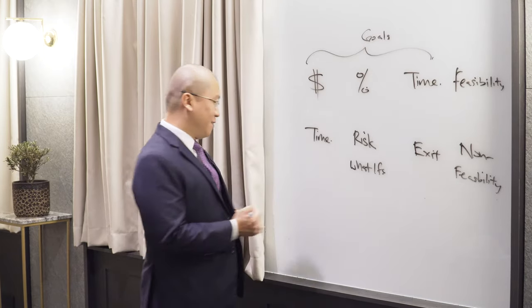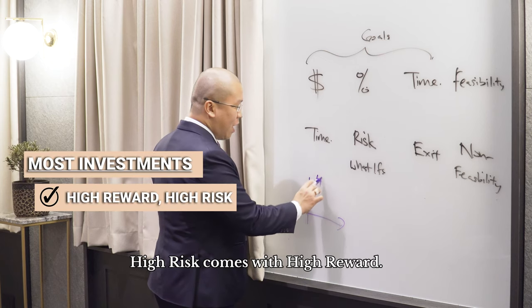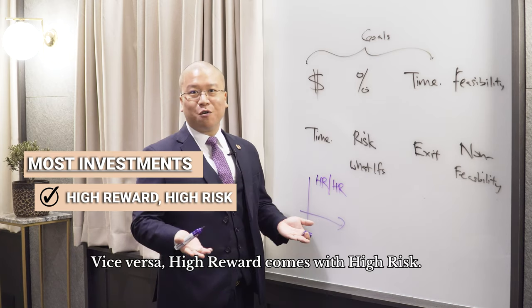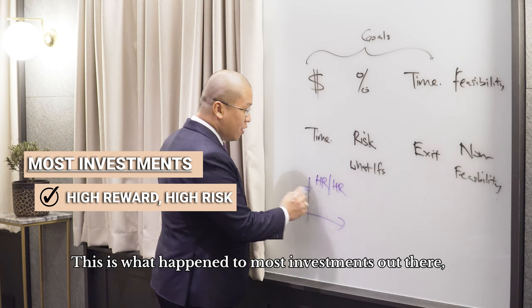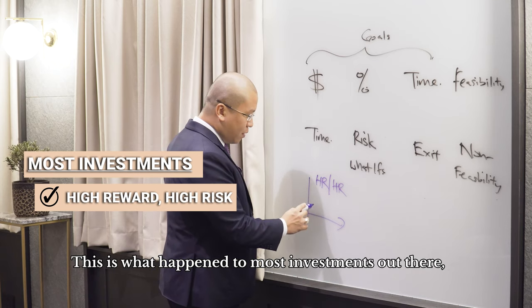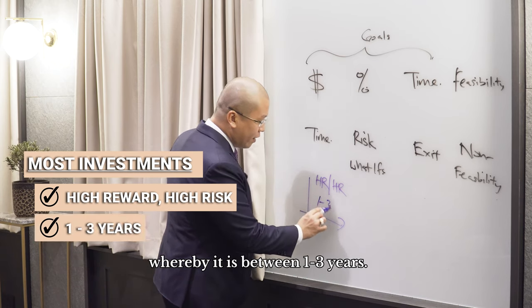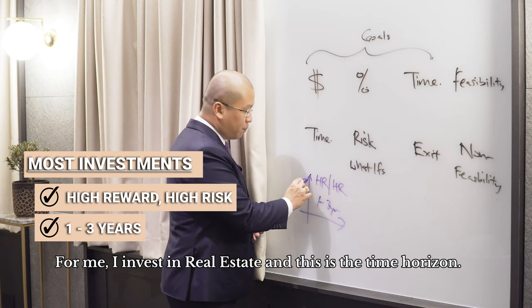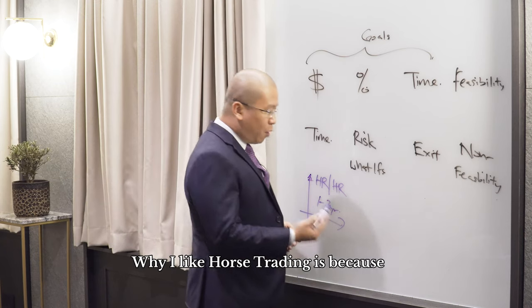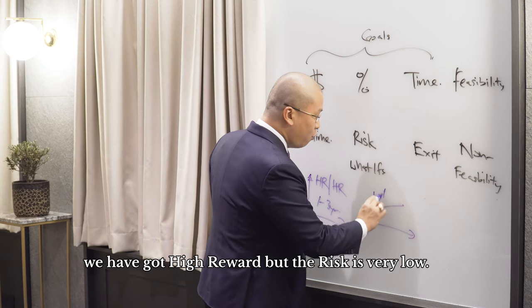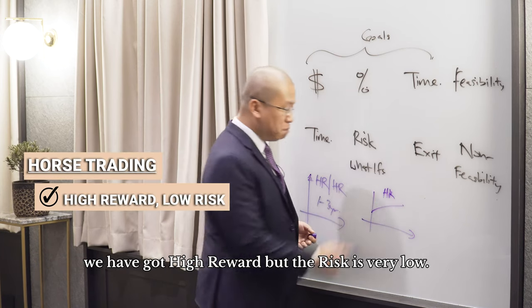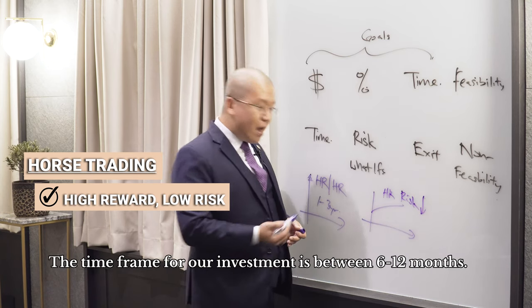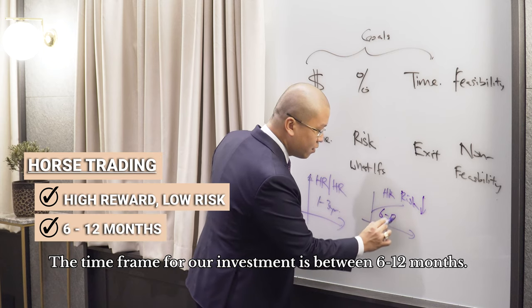But many of you will also know about this — in all investment, we all know that high risk comes with high rewards, and likewise, vice versa, high rewards come with high risk. So these are mainly what happens to most investment plans out there, whereby the timeframe is between one to three years. For me, I invest in real estate, and this is typically the time horizon. What I have is high rewards, but the risk is very low, and the timeframe for our investment is between six months to a year.